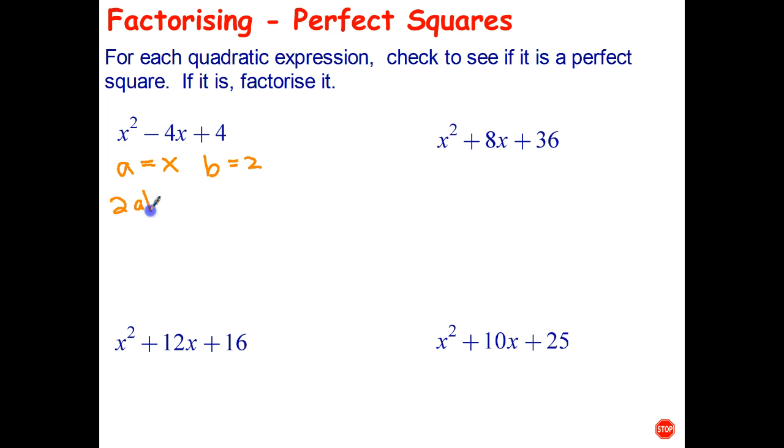And the middle term has to be 2ab. Well, let's see what 2ab is. Well, 2ab is 2 multiplied by x multiplied by 2. 2 times 2 is 4 times x is 4x. And it fits the pattern.